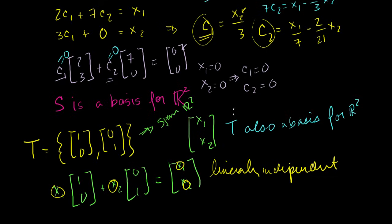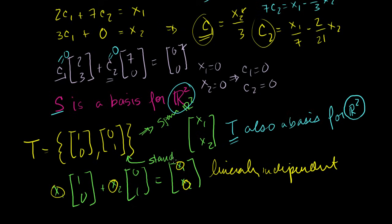I wanted to show that a vector subspace doesn't have just one basis — it can have multiple, in fact normally infinitely many bases. Both S and T are valid bases for R2. T is actually called the standard basis, and this is what you're used to in regular calculus or physics class. From physics, (1,0) is the unit vector i and (0,1) is the unit vector j — the standard basis for two-dimensional Cartesian coordinates.